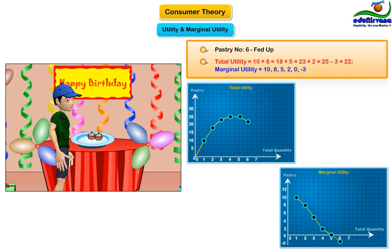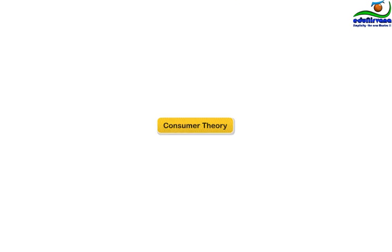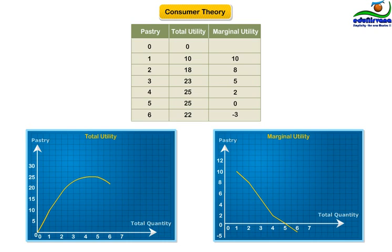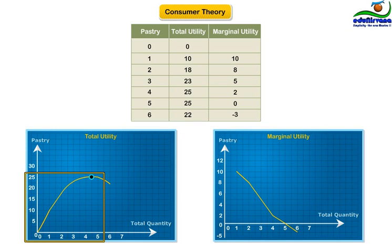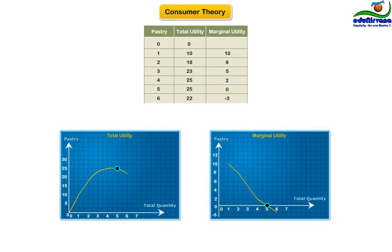You had reached a stage where incremental eating led to a decrease in your overall happiness. Let's summarize it in the table below. As can be seen, when the same product or service is consumed again and again, total utility increases initially. The incremental increase in utility — that is, marginal utility — generally decreases over time. Beyond a point, the marginal utility becomes negative. This is when the total utility starts decreasing.